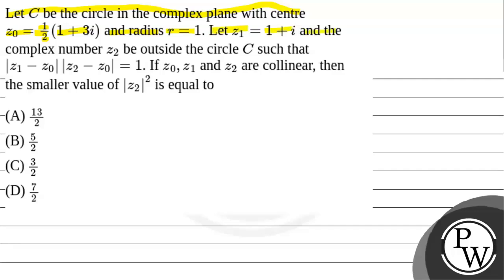Let z1 equal 1 + i and the complex number z2 be outside the circle C such that |z1 - z0| × |z2 - z0| = 1. If z0, z1, and z2 are collinear, then the smaller value of |z2|² is equal to: option (A) 13/2, option (B) 5/2, option (C) 3/2, and option (D) 7/2.